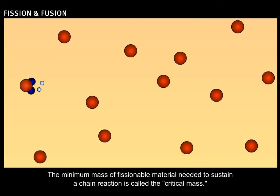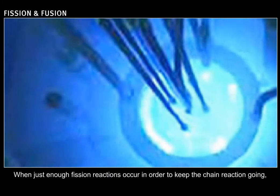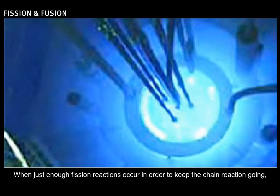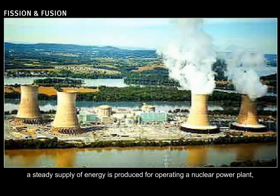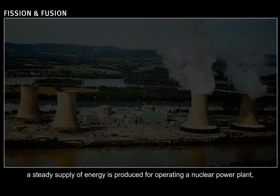The minimum mass of fissionable material needed to sustain a chain reaction is called the critical mass. When just enough fission reactions occur in order to keep the chain reaction going, a steady supply of energy is produced for operating a nuclear power plant.